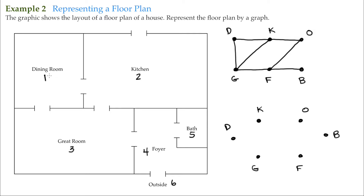Dining room connects to the kitchen and to the great room. Great room connects to the dining room, to the kitchen, and to the foyer. Kitchen connects to the dining room, to the great room, and to the outside. Foyer goes to the great room, to the bath, and to the outside.